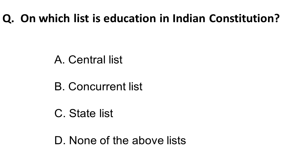The third question is: on which list is education placed in the Indian Constitution? There are three lists — the Union List dealt exclusively by the Centre, the State List dealt exclusively by the State, and the Concurrent List where both Centre and State have a say, with the Centre having an upper hand. Education is placed in the Concurrent List of the Indian Constitution. This is a memory-based question — remember it.